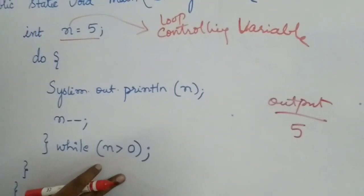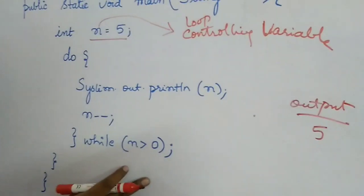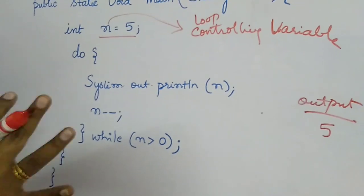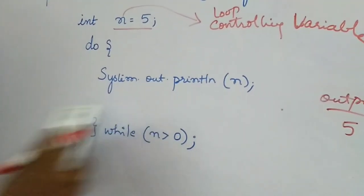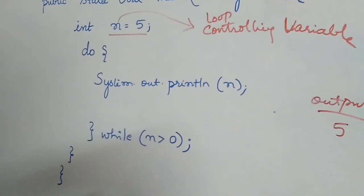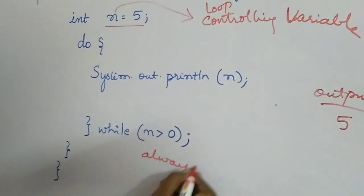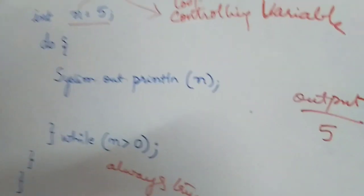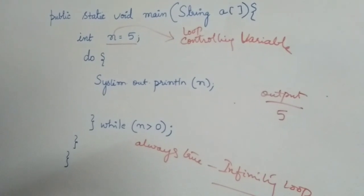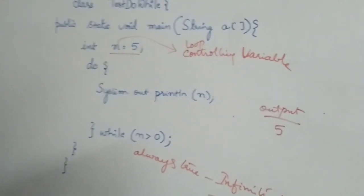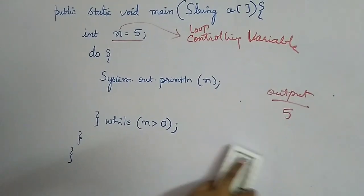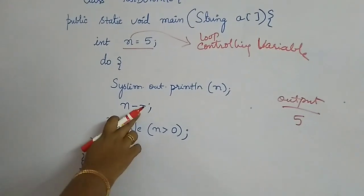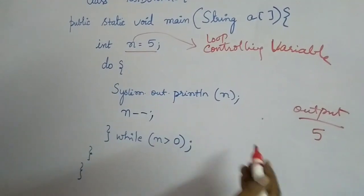We have a decrement operator for n. As mentioned, there must be a mechanism to update the loop controlling variable — it can be incrementing, decrementing, or some expression. Without this update, the condition will always be true and the loop will run infinitely. So n-- is used to update the controlling variable each iteration.